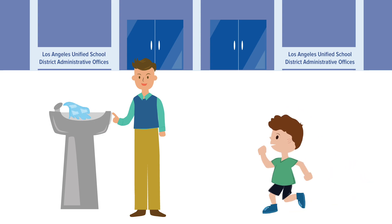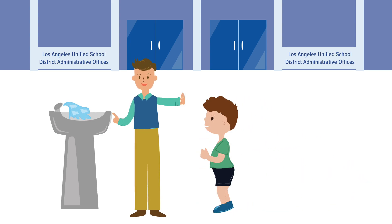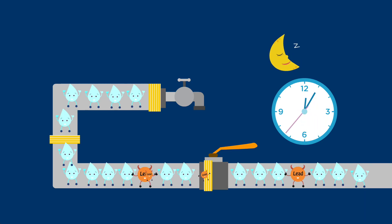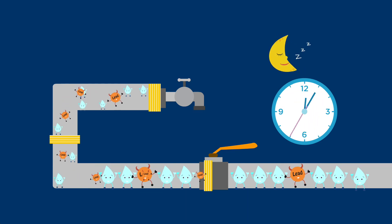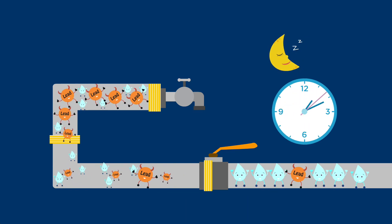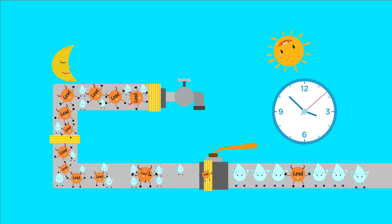Schools in Los Angeles have long relied on a practice called flushing to protect children from lead in water. Lead often leaches into water from lead-bearing plumbing. That means lead levels can rise when water sits in pipes and fixtures for long periods of time.